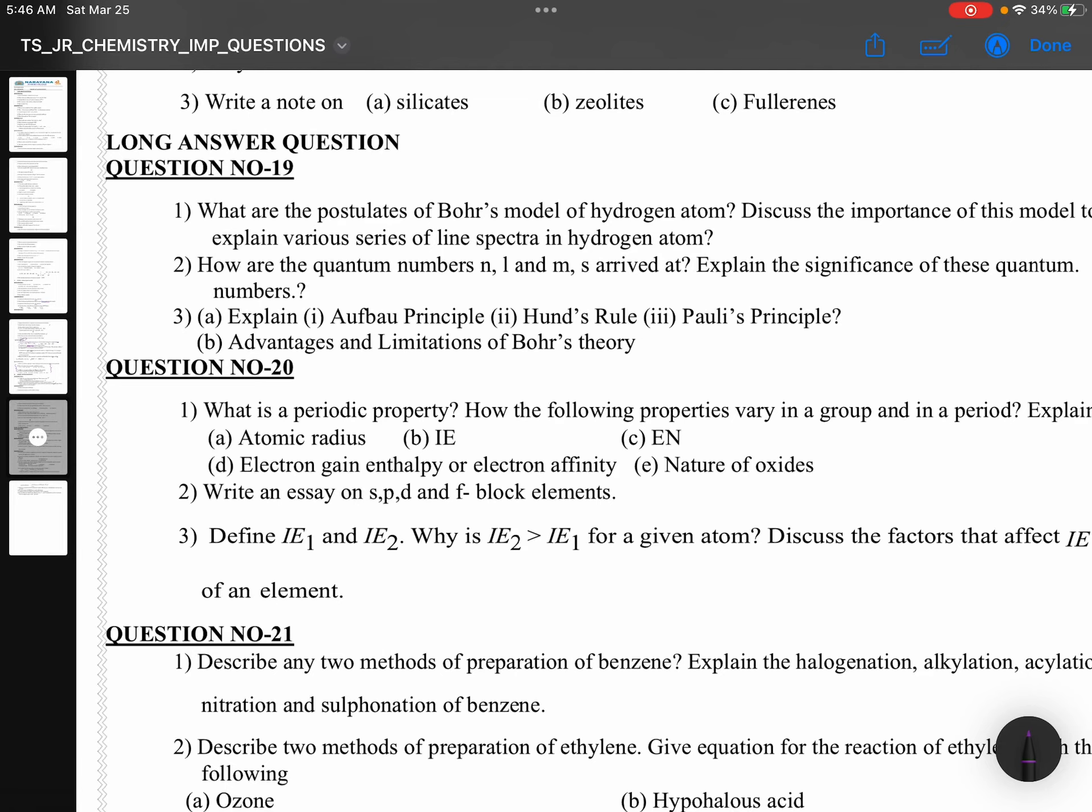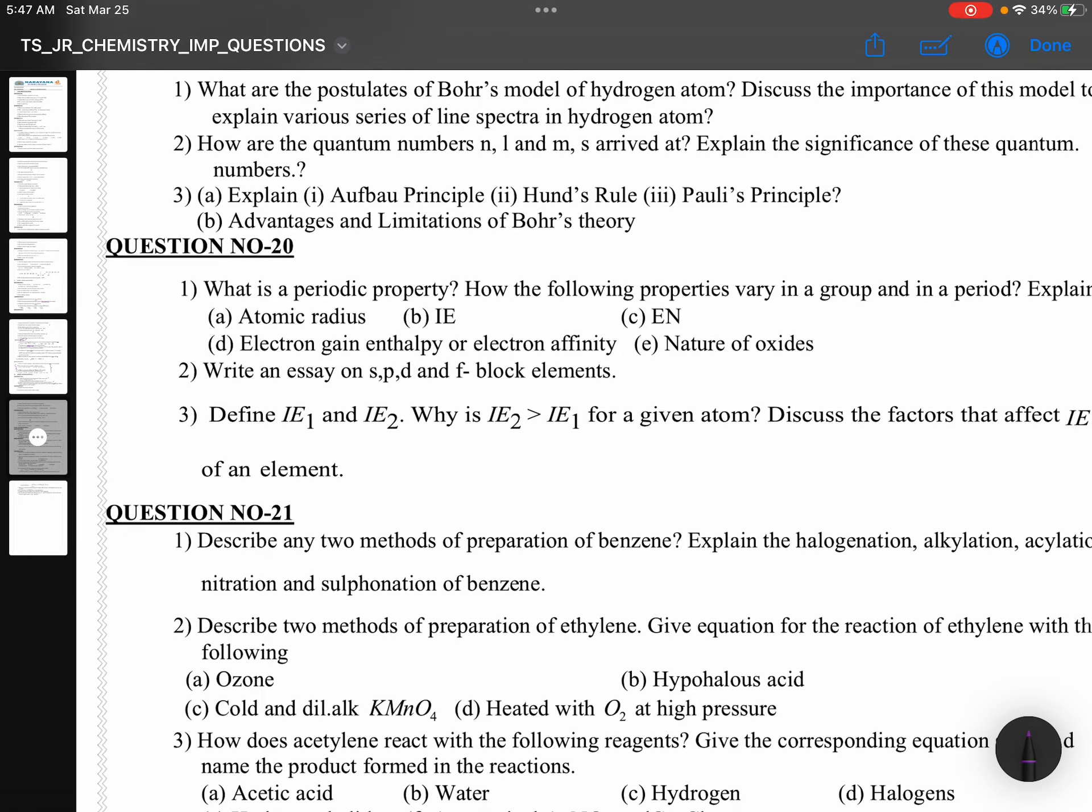Long answer questions: Bohr model. Hydrogen spectrum. Quantum numbers. Explain the significance. The third question is very interesting: Aufbau principle, Hund's rule, Pauli's rule. Advantages and limitations of Bohr's theory. Less chances. Generally, first or second question only will come.